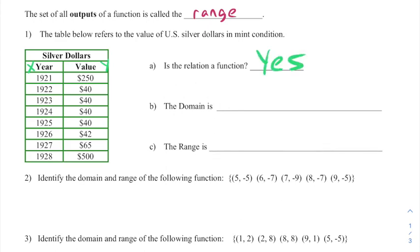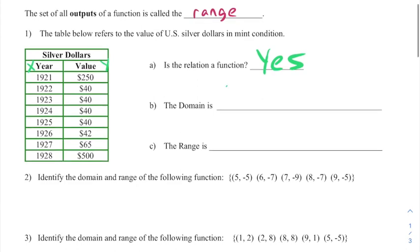Now as far as the domain, this is a little tedious, but this is what you got to do. The domain is the list of all, or the set of all inputs. So I'm going to make what's called set notation here and I'm just going to take off every one of these numbers and write them down.